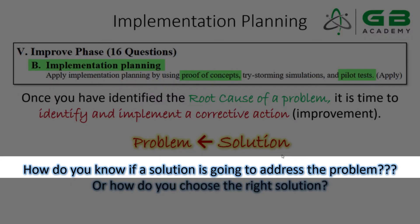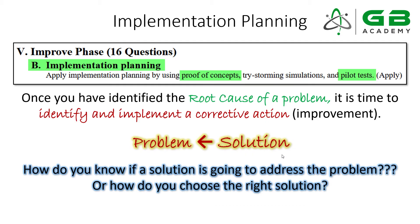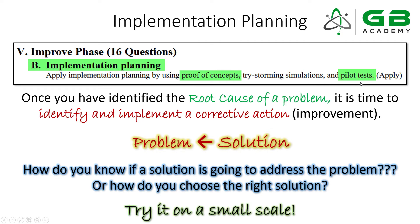This whole idea of implementation planning is about getting to the right solution and answering important questions: how do you know if a solution is going to address the problem, or how do you choose the right solution? As a general rule, looking at what the body of knowledge says about proof of concept, simulations, and pilot testing — the answer is to try out the solution on a small scale. You want to de-risk your project by implementing your solution on a small scale and measuring its effectiveness.